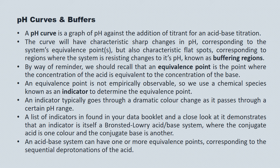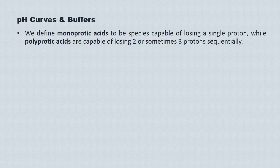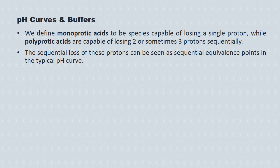An acid-base system can have one or more equivalence points that correspond to sequential deprotonations of the acid. We define monoprotic acids to be species capable of losing a single proton, while polyprotic acids are capable of losing two or sometimes three protons sequentially. The sequential loss of these protons can be seen as sequential equivalence points in a typical pH curve.